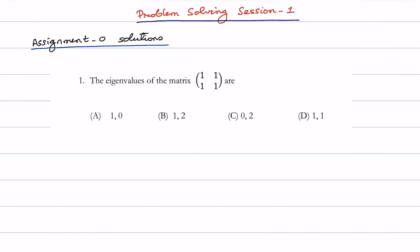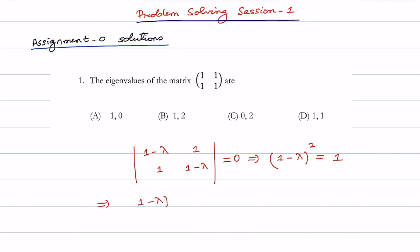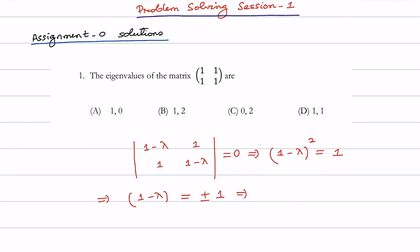The first problem in assignment 0 was to find out the eigenvalues of the given matrix [[1,1],[1,1]]. It's very easy. You just have to set up the characteristic equation and find the roots. The characteristic equation gives (1−λ)² = 1, therefore 1−λ = ±1, which gives λ = 0 or λ = 2. So the correct option is option C.